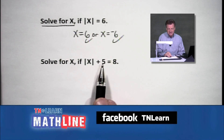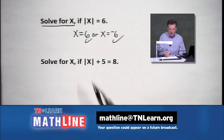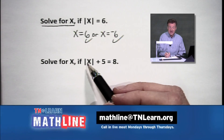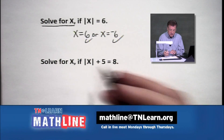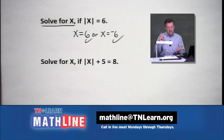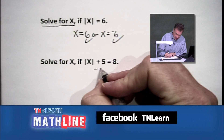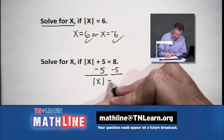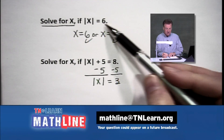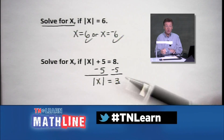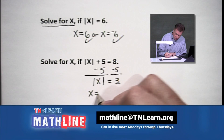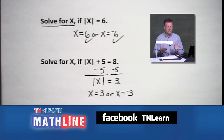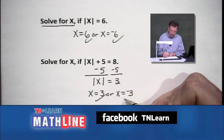Now we have a little plus 5 added in. Before you can play the game of two solutions, you've got to get the absolute value bars by themselves. We subtract 5 from both sides, and we have the absolute value of x equaling 3. Now it looks like the first problem — only with a 3 instead of 6. So we get two solutions: x equals positive 3, or x equals negative 3.